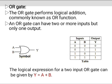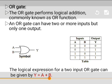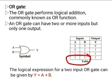Note that the symbol plus is the logic OR symbol and not the arithmetic plus symbol. Hence, in the last condition of the truth table, Y equals A plus B equals 1, and not 2.